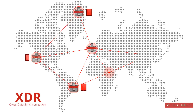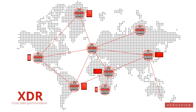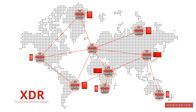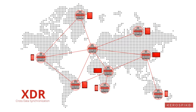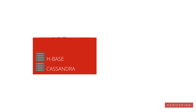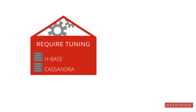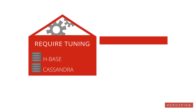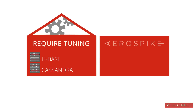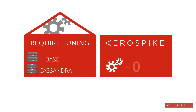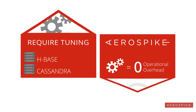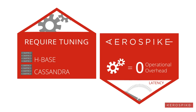We arrived at the decision of using AeroSpike because of some of the product features. At InMobi, we serve our ad requests from various different parts of the world, and AeroSpike has the XDR feature which allows cross data center syncing. We looked at a couple of different technologies — HBase and Cassandra — while we were evaluating AeroSpike. What we realized is that with HBase and Cassandra there was a lot of performance tuning required to get maximum performance. On the other hand, we found that AeroSpike's operational overhead was nearly zero. It worked out of the box, and that low latency was one of the key requirements for us to make our product successful. Hence we decided to go with AeroSpike.